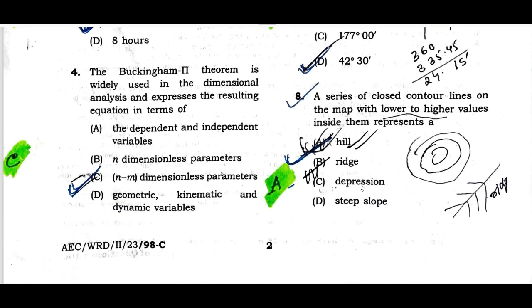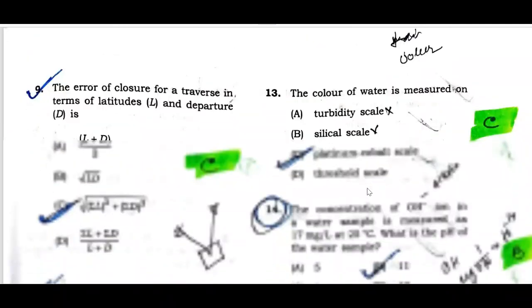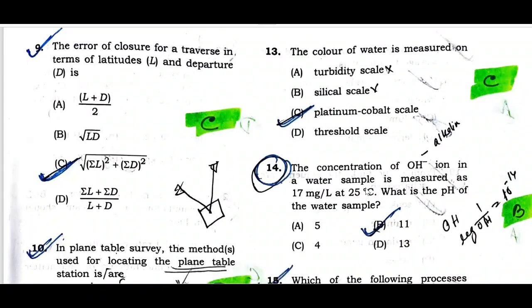Question number nine: This is the error of closure. The error of closure in terms of latitude or departure can be found using the formula: root over (summation of latitude squared plus summation of departure squared).